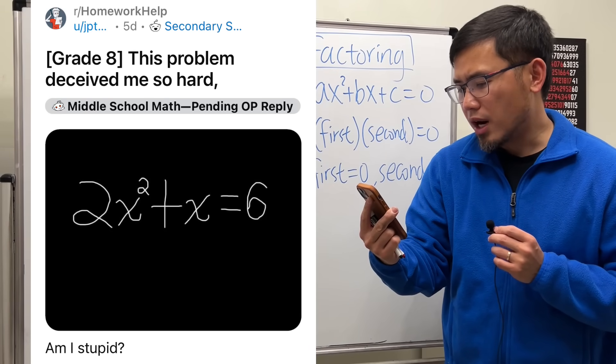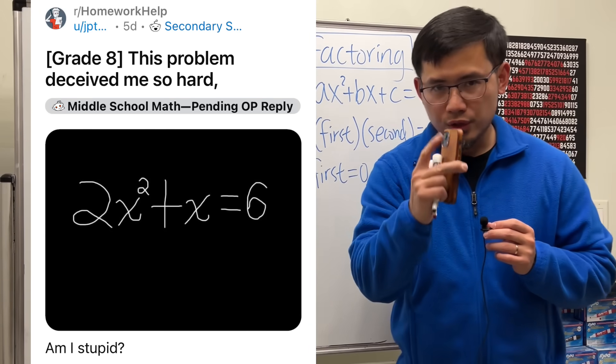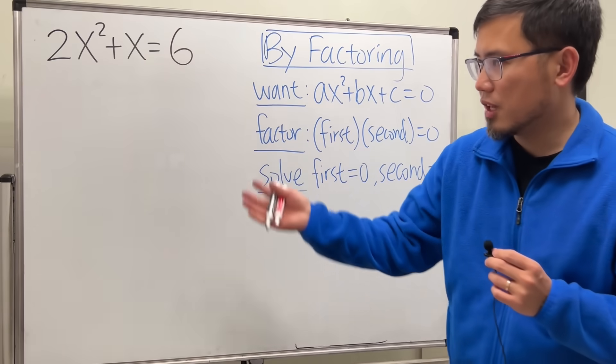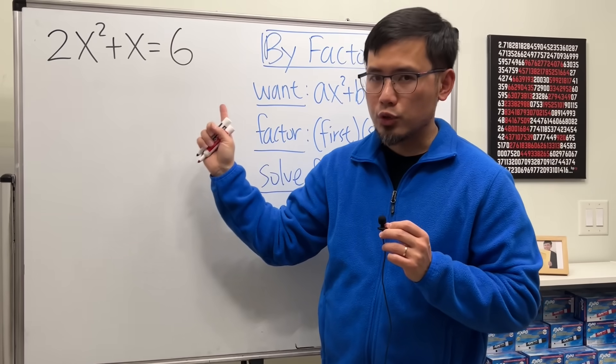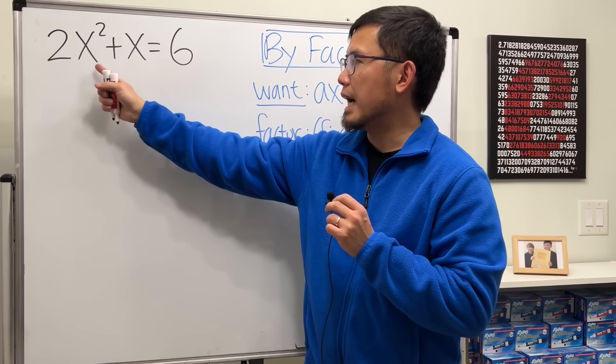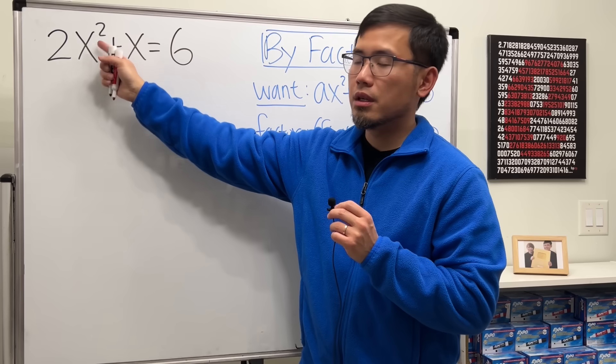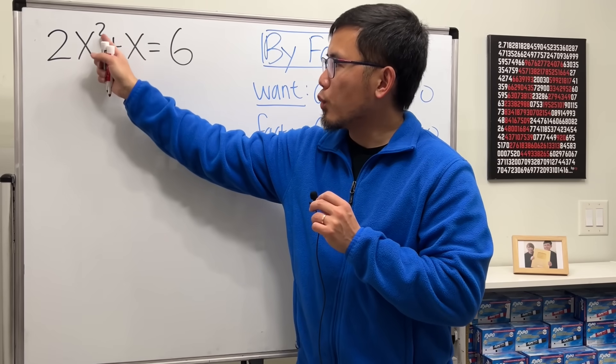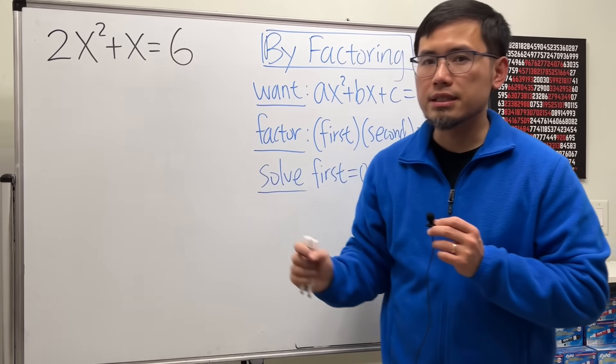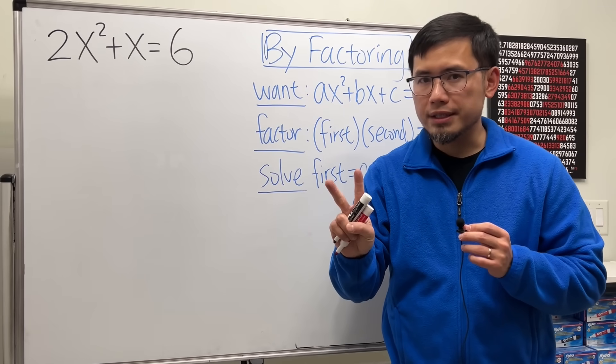This problem deceives me so hard. Am I stupid? No, you are not stupid. Let me clarify this for you. We are solving a quadratic equation because here we have the highest power of x being the 2. This equation is 2x squared plus x equals 6, and we have a few ways to do it. I will show you two ways.